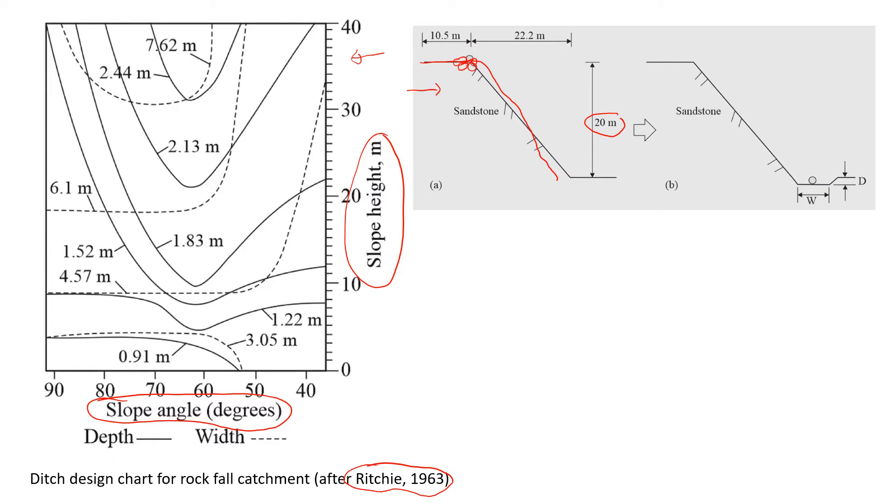That can potentially bounce down or roll down and go all the way here. Maybe we have a house here or something, so we just want to make sure that we will do some preventive measures before this rock fall happens. So one of the things that we can do is a ditch, so it's a catchment. Typically we just excavate some part here and when rocks bounce or roll down they're just going to be caught in this catchment.